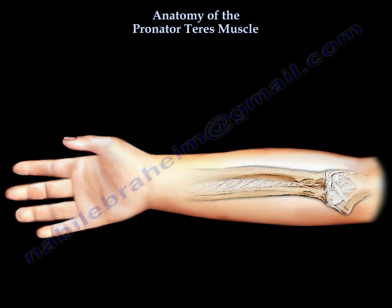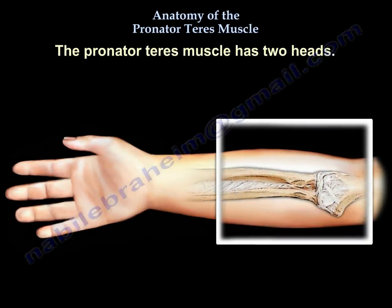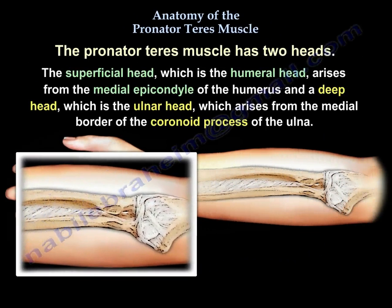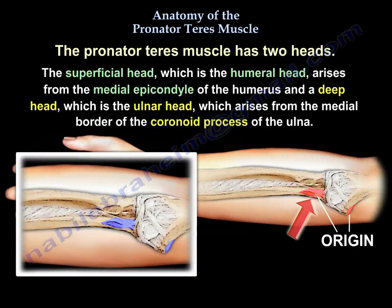The muscle has two heads: the superficial head, which is the humeral head, and it arises from the medial epicondyle of the humerus; and a deep head, which is the ulnar head, and it arises from the medial border of the coronoid process of the ulna. Here you can see an illustration of the origin of the two heads of the pronator teres muscle.